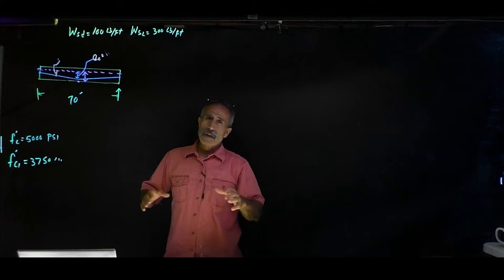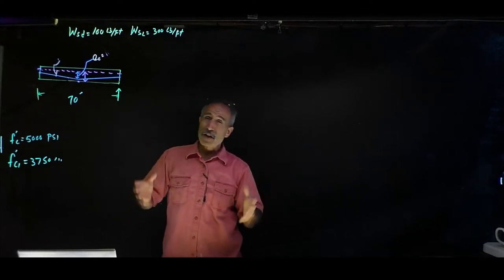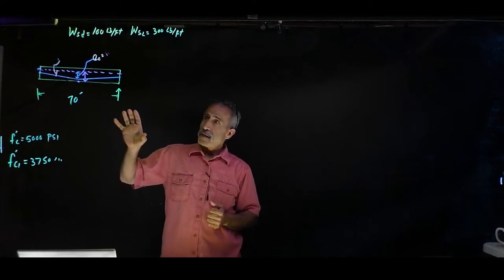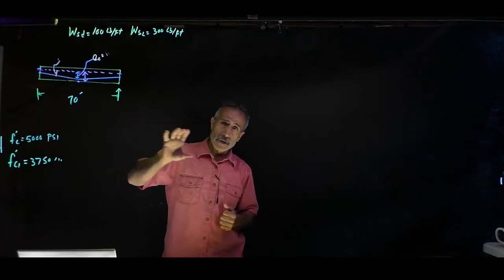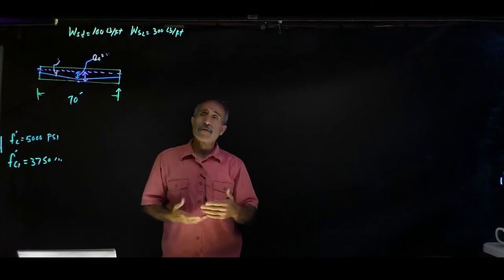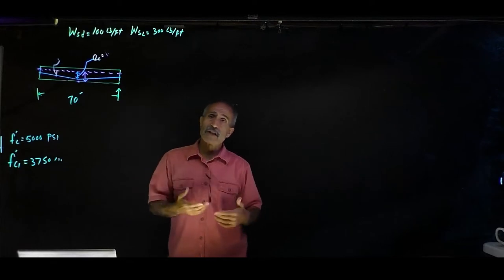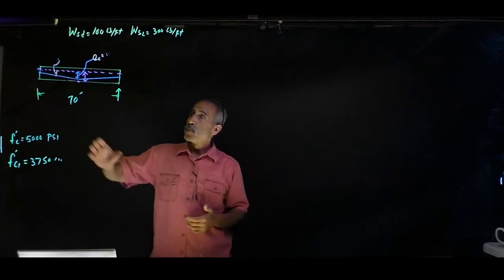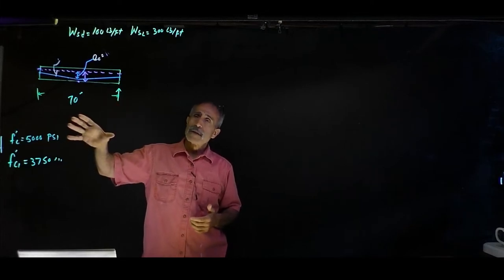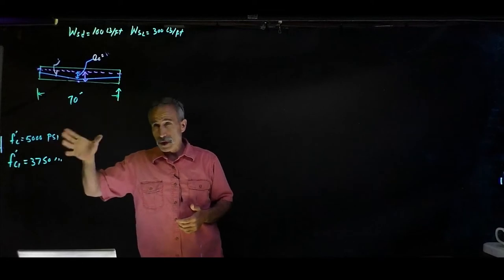An experienced designer would automatically know what beam to pick and go ahead and select a double-T beam from the code, then do a structural analysis. Since we don't have that experience, we're going to figure out what size to select. One of the things I need to do is assume the weight of the beam — I'm going to assume the exact weight of the beam I want to pick.